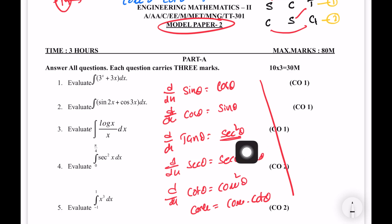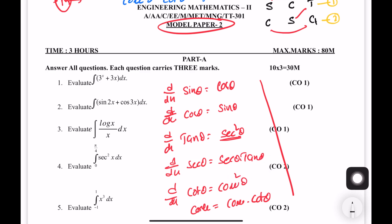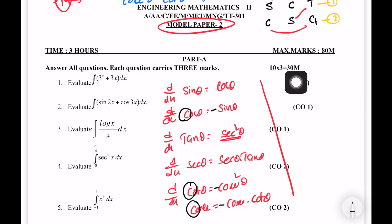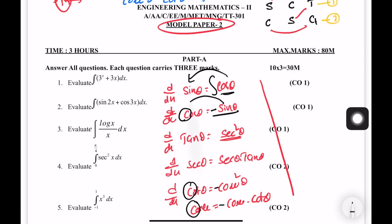This is called the u into v method. We will see: integral of cos theta, integral of sin theta, integral of sin theta minus cos theta, integral of secant squared theta, integral of secant into tan theta.